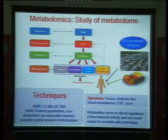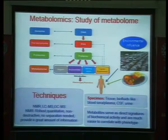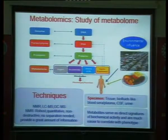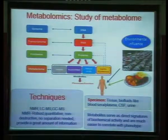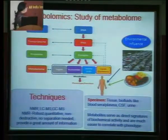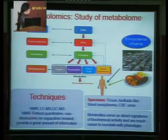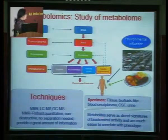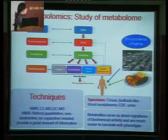Why did we choose metabolomics? Metabolomics is the study of metabolites and is a newly emerging field alongside genomics, transcriptomics, and proteomics. The information flowing from genome to transcriptome and proteome is reflected in the metabolome, which consists of sugars, nucleotides, amino acids, and lipids. These metabolites represent phenotype and function, and even environmental and dietary influences can be studied using metabolomics. We used NMR techniques, which allow flexibility in the type of tissue or specimen used, and these metabolites serve as direct signatures of biochemical activity, much easier to correlate with the phenotype.